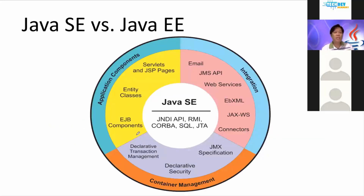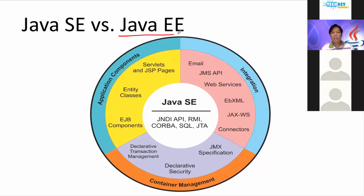These are the different technologies. I don't want to overwhelm you, but I'd like to give emphasis that when we talk about Java EE, this is not just a one-man show. It can be separated into three different technology groups: a technology group for integration, for development, and for container management.